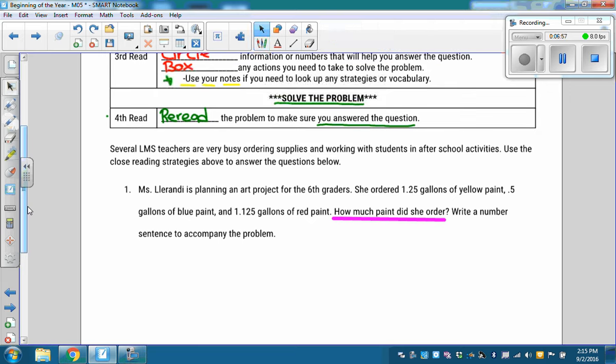Then I'm going to number the steps if there's more than one step that I need to solve the problem. Well, for me, when I think about this, I'm just wondering, Maya, what kind of operations do you think you would do here to figure out how much paint she ordered? Addition? Yeah. So some of you might write off to the side step one is addition, or you might just think if this is your first step, you have to figure out how much paint she ordered. Step one. And the second step is that I'm going to need to write a number sentence to accompany the problem.